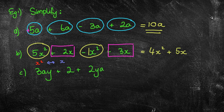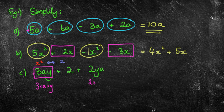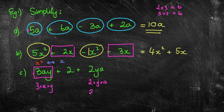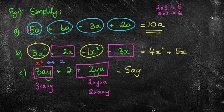The last like-terms example has 3ay. There's a lone 2 with no 'ay', so that's not a like term. But we also have 2ya — since multiplication order doesn't matter (just like 2 times 3 equals 3 times 2), 2ya can be written as 2ay. So 3ay plus 2ya equals 5ay, with the plus 2 remaining at the end that we can't simplify further.